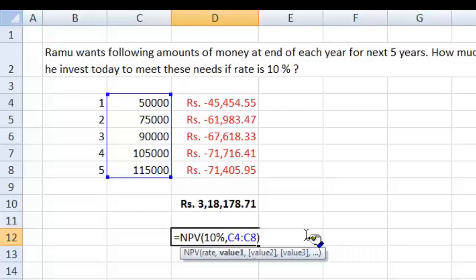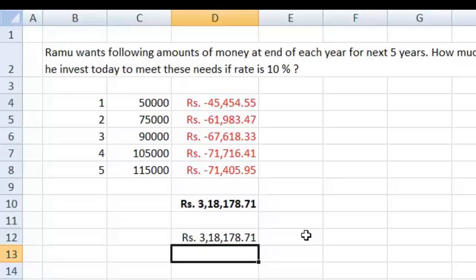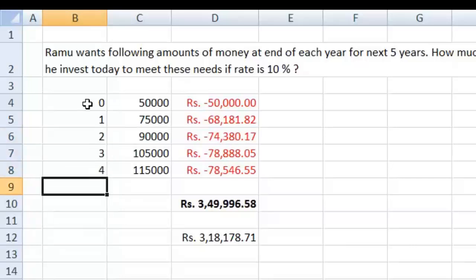So what do you do? Well, NPV function always assumes that the value given to it in the first column or value 1 is value at the end of year 1. Now, if I were to change this question and ask what is the amount that you need if these monies were required at beginning of each year, then you would say that 50,000 is required at 0.0, that is beginning of year 1. 75,000 is required at beginning of year 2, which is also end of year 1, and then 2, 3, and 4. So each amount is required 1 year early.